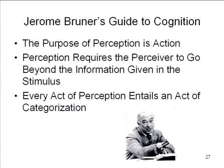Second, perception requires the perceiver to go beyond the information given in the stimulus. This insight comes to us at least as far back as the mid-19th century and Hermann von Helmholtz. The general idea is that the stimulus is not sufficient to tell us what's going on in the world. The information provided by the stimulus is vague, fragmentary, and ambiguous, and yet the perceiver has to supply something — knowledge, beliefs, expectations — to fill in the gaps and form a workable mental representation of the world outside.